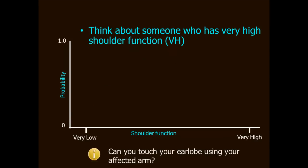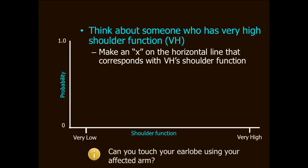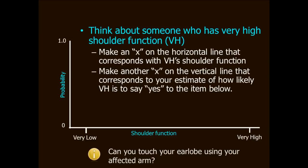Now we are going to consider a person who has very high shoulder function. This person also is known by informative initials VH standing for very high shoulder function. As you did before, make an x on the x-axis that corresponds to your best guess of where this person is on the shoulder continuum from very low to very high. Now make another x on the y-axis to indicate your best guess at how likely VH is to say yes to this item. Can you touch your earlobe using your affected arm?